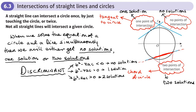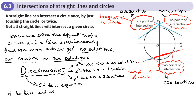When we combine the equation of the line and the circle together to form a new quadratic, we can look at the discriminant of that combined equation. This tells us whether the line doesn't intersect the circle, just touches it at one point as a tangent, or crosses it at two points.